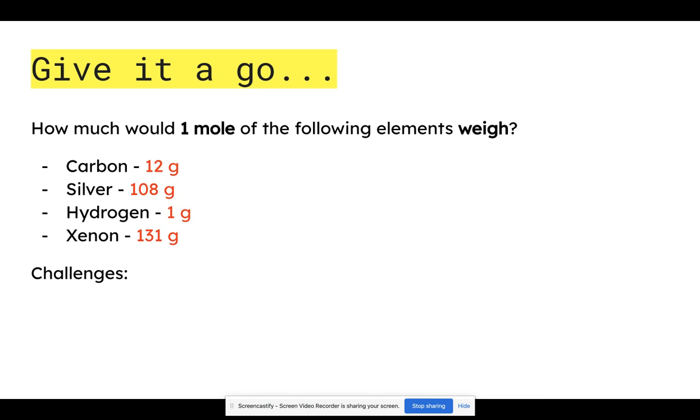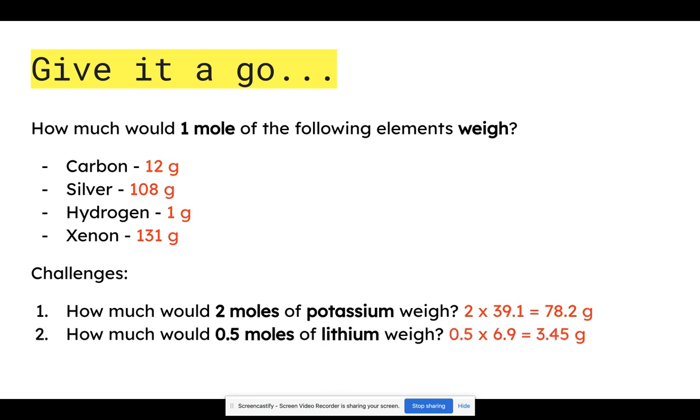For your challenges, how much would two moles of potassium weigh? We know that one mole of potassium weighs 39.1 grams. So if we have two moles, it would be twice that heavy. 0.5 moles of lithium: we know one mole weighs 6.9 grams, so therefore half that much would weigh half that much, 3.45 grams.